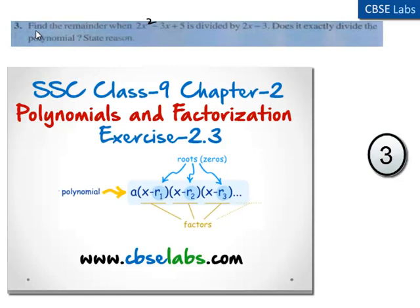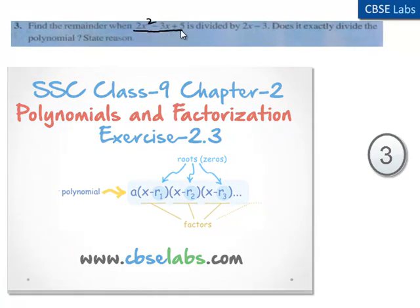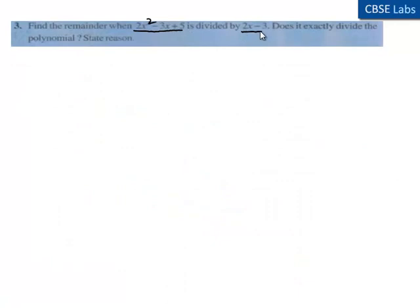Coming to the third problem, we need to find the remainder when 2x² - 3x + 5 is divided by 2x - 3. Does it exactly divide the polynomial and state the reason.